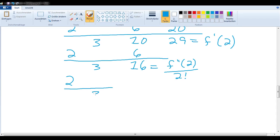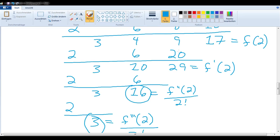And one last level, 3, we have a 3 here. And that is f triple prime of 2 divided by 3 factorial. Like I said, these are the exact values that we need in order to create our Taylor polynomial.